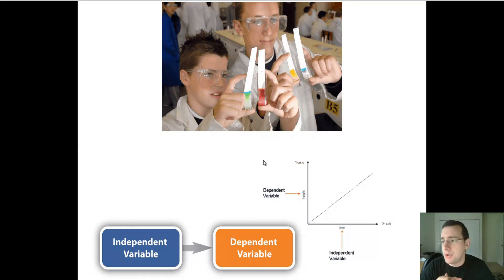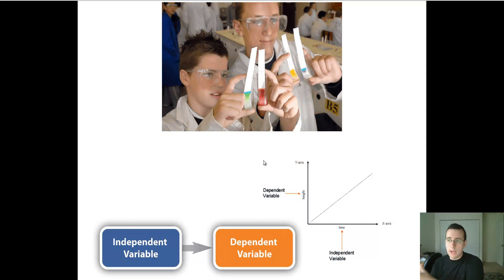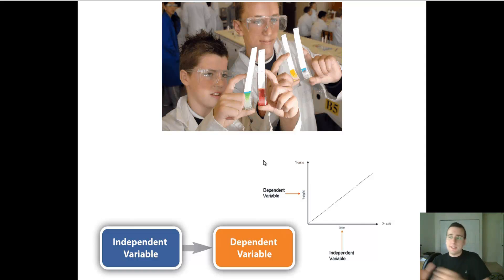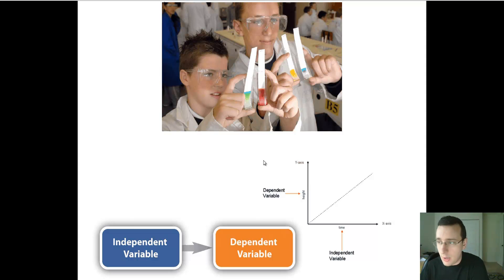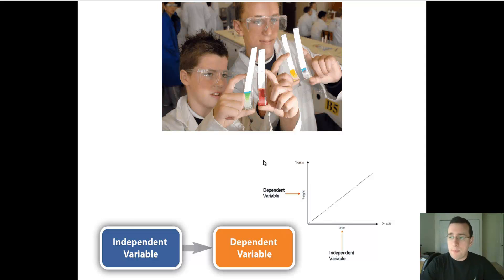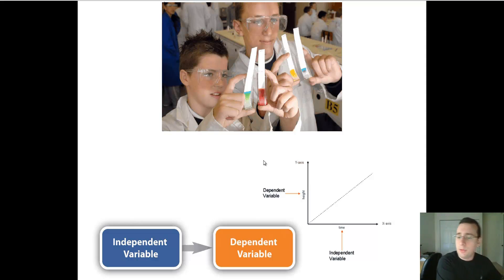The same thing is measured across several groups that have different levels of the independent variable. That same thing that's measured, we call the dependent variable. Remember, you control everything except one variable, and then measure the same thing across all groups. These groups also include a group that is not manipulated — left by itself for comparison's sake — and we call that a control group. Based on what happens between the experimental and the control group, you can say what the independent variable is doing to the dependent variable.